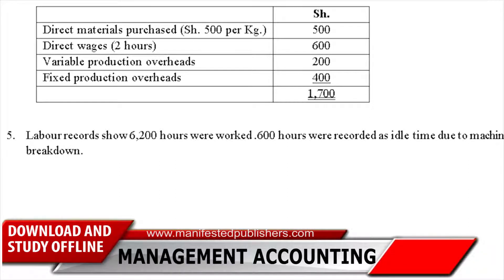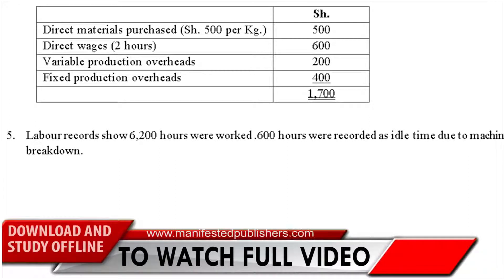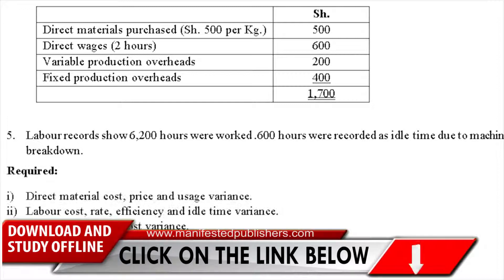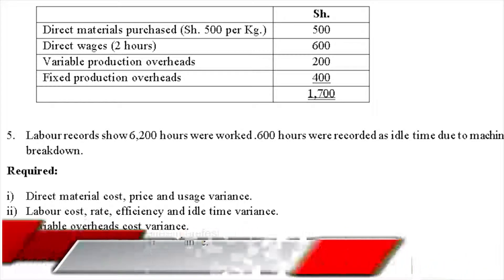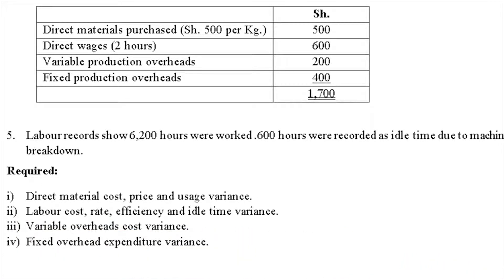Number five: labor records show 6,200 hours were worked, with 600 hours recorded as idle time due to machine breakdown. Required: (i) direct material cost price and usage variance; (ii) labor cost — labor rate, labor efficiency, and idle time variance; (iii) variable overhead cost variance; and (iv) fixed overhead expenditure variance.